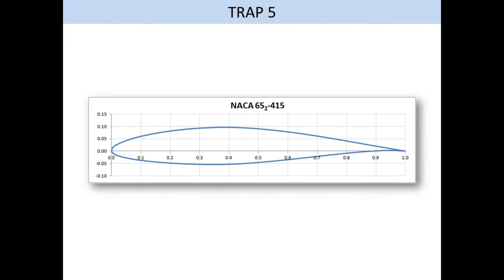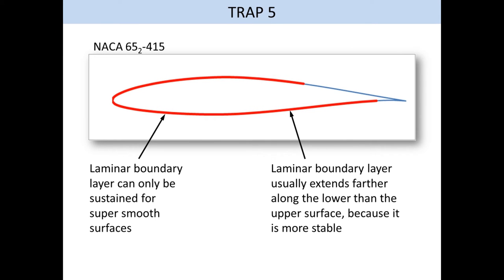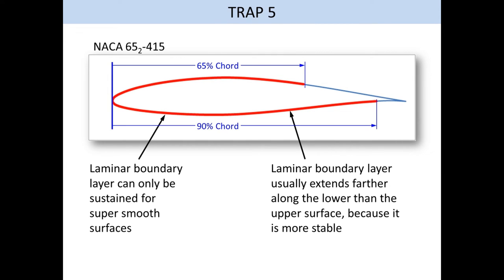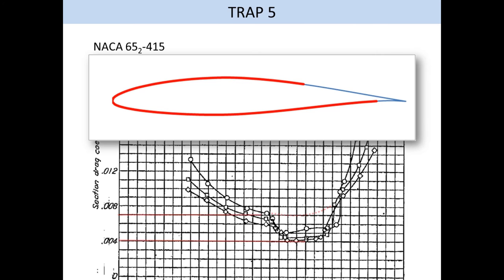This is the NACA 65-415 airfoil. This is its drag polar. What is of interest here is its shape here, which we call a drag bucket. Over this range of lift coefficients, the boundary layer is laminar from the leading edge as far back as 65% of the airfoil's chord length on the upper surface and 90% of the lower one. Since laminar skin friction is about 4 times less than turbulent friction, the result is substantial reduction in drag. But you have to recognize that sustaining laminar boundary layer is very hard and it requires expensive, high quality surfaces to achieve. Even so, dedicated natural laminar flow airfoils can easily become turbulent due to the accumulation of dead bugs on the leading edges or skin waviness.